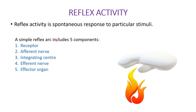A simple reflex arc includes five components. The first one is the receptor, which receives the stimulus. When the receptor is stimulated, impulses are generated in afferent nerves. The second one is the afferent nerve — the sensory nerve that conducts sensory impulses from the receptor to the integrating center. The third one is the integrating center, located in the brain or spinal cord, which generates appropriate motor impulses in response to the sensory impulses.